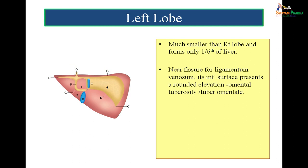The left lobe of the liver forms only one-sixth of the liver. Near the fissure for ligamentum venosum, its inferior surface presents a rounded elevation called the omental tuberosity or tuber omentale.